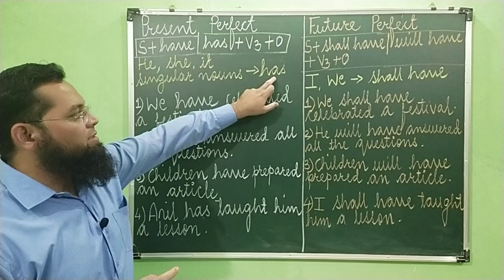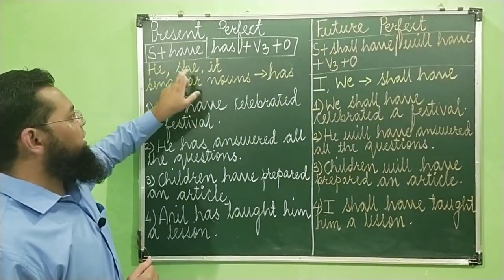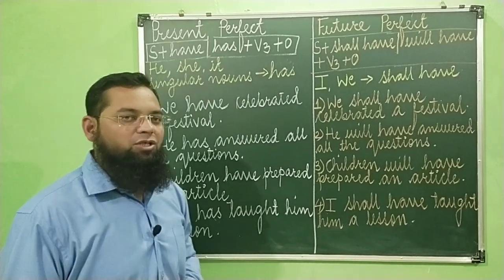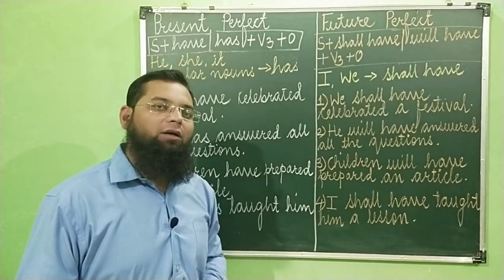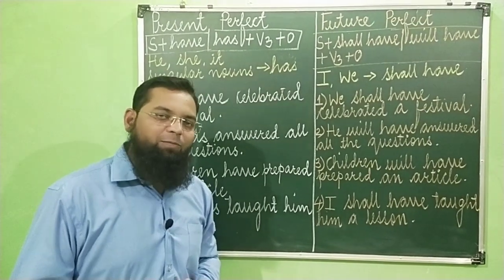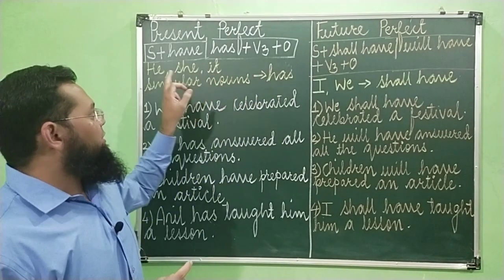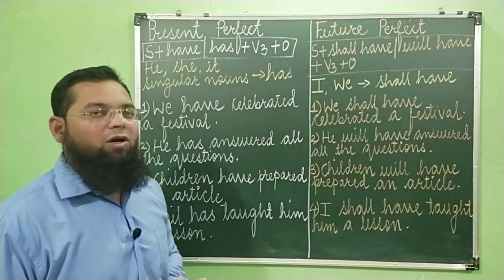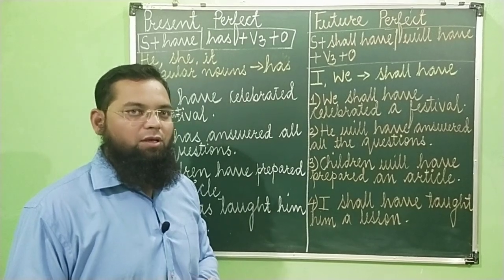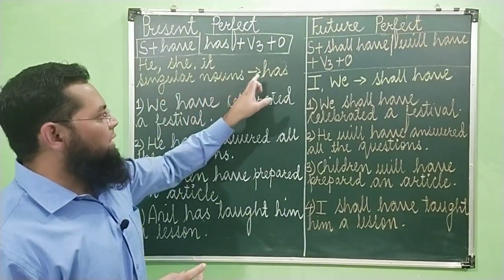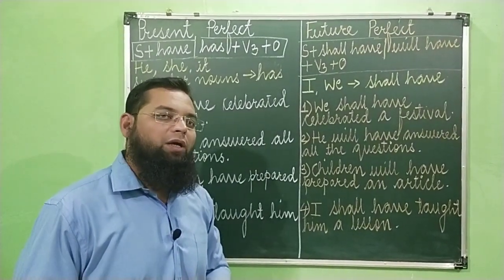Helping verb 'has' will be used with he, she, it — these are the singular third person subjects. Has ka istemal present perfect tense mein he, she, it — yeh pronouns ke saath hoga. Isse kehte hain singular third person. Aur singular nouns ke saath bhi hum has ka istemal karenge. Proper nouns bhi us mein included hain.